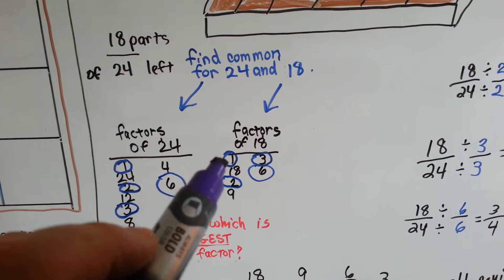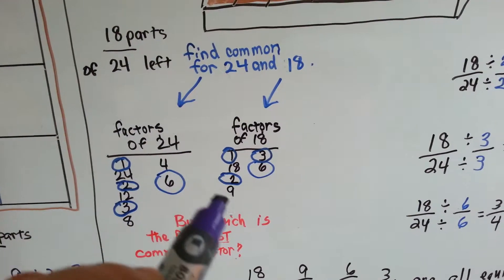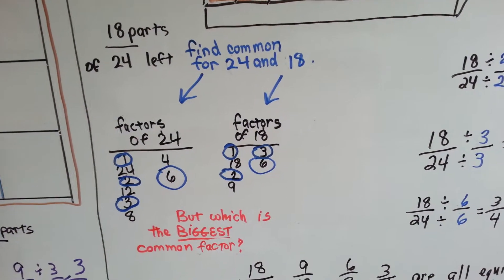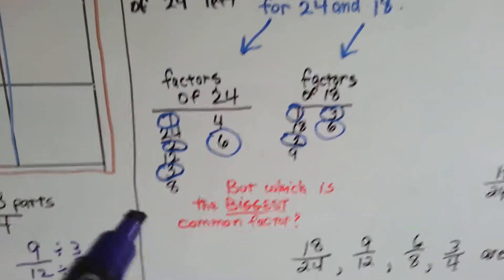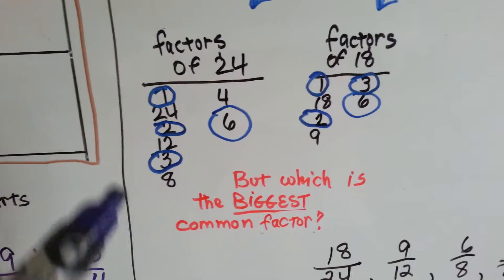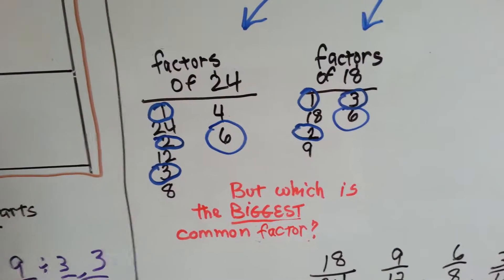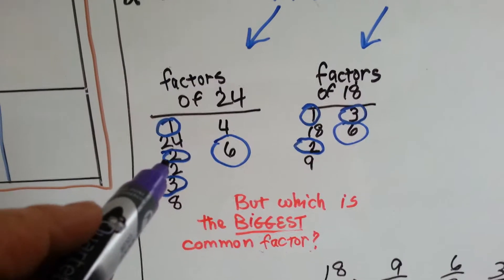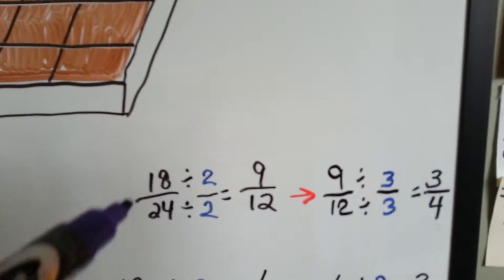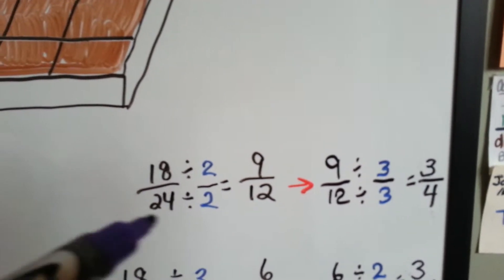Factors for eighteen. One times eighteen, two times nine, and three times six. What factors do they have in common? They've got a one, a two, a three, and a six. So what happens if we try using the two? Alright, let's take a look.